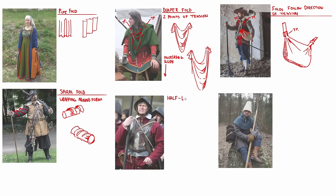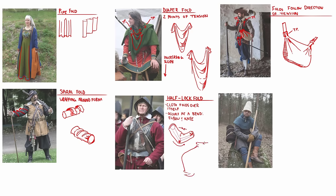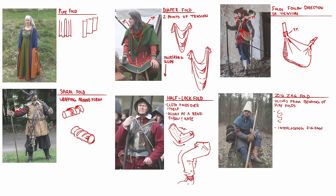In this next picture we see a good example of a half-lock fold, which is caused by the bunching of fabric on the inner elbow as the arm contracts. The fabric on the opposite side exhibits less folding because it is stretched rather than compressed. A fold that I haven't mentioned yet is the zig-zag fold, which results from a bending of a pipe fold, creating this interlocking zig-zag pattern visible on this man's lower arm.